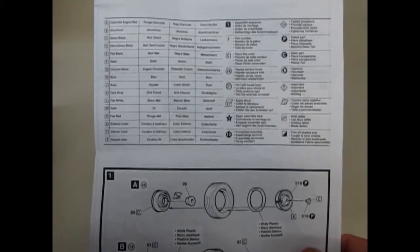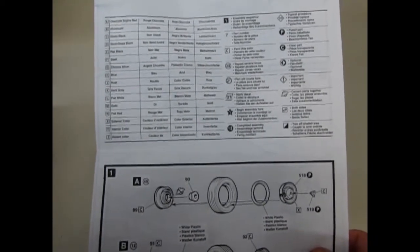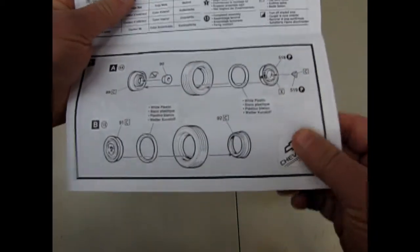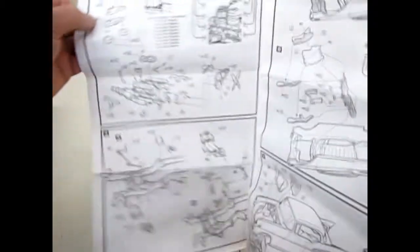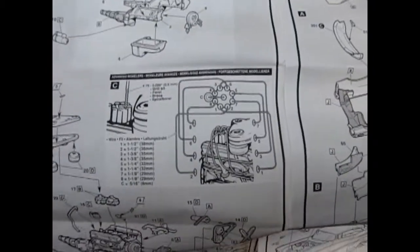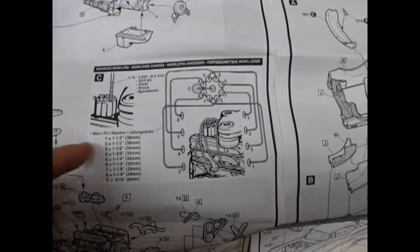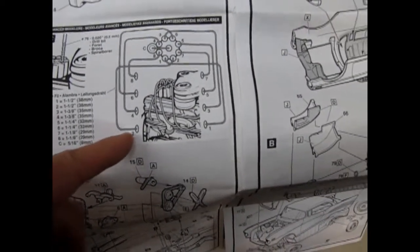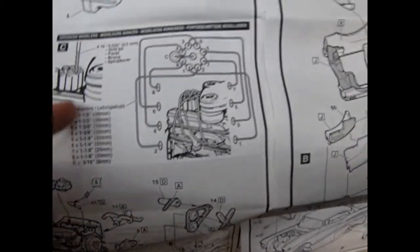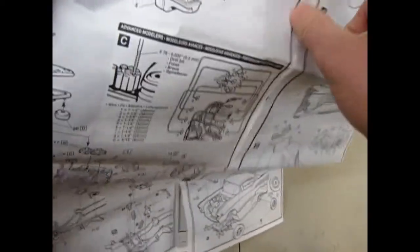You get this nice paint color chart for all your components. The wheels are a nice multi-piece set. And here it even has examples on drilling out your spark plug wires and then the length of the wire to cut them in that go from your distributor and your coil in through the rest of your engines which is quite a nice feature on a model kit.